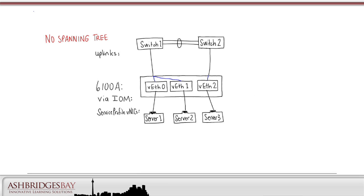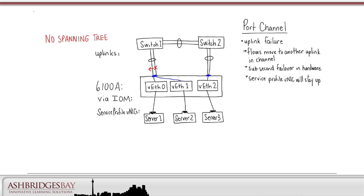Let's go back to our drawing for dynamic pinning. This time, let's imagine we have two links to each upstream switch, and these are port channeled. In this case, the vEthernet interfaces will be round-robin load balanced across the port channels. If an uplink fails, the flows will move to another uplink in the channel. The recovery will be hardware-based and take less than one second. The service profile vNIC will stay up. No GARPs need to be sent. Port channels are recommended for connecting to upstream switches.